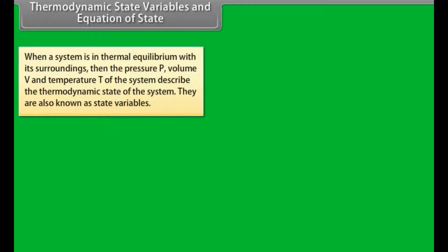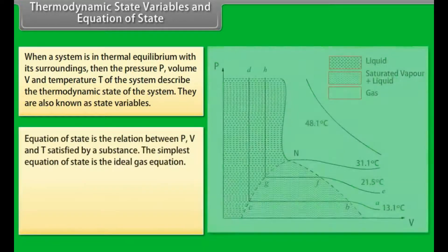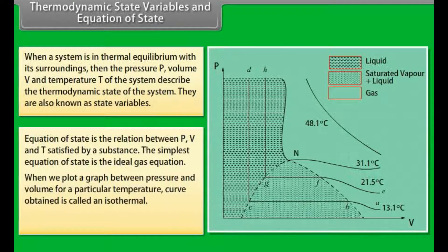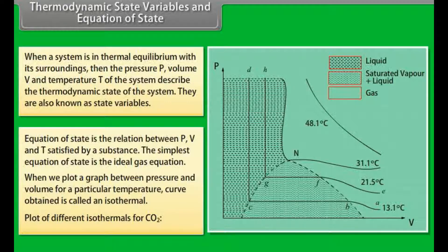When a system is in thermal equilibrium with its surroundings, the pressure P, volume V and temperature T describe the thermodynamic state of the system. These are also known as state variables. The equation of state is the relation between P, V and T satisfied by a substance. The simplest equation of state is the ideal gas equation. When a graph is plotted between pressure and volume at a particular temperature, the curve obtained is called an isothermal. A plot of different isothermals for CO₂ is shown in the graph.